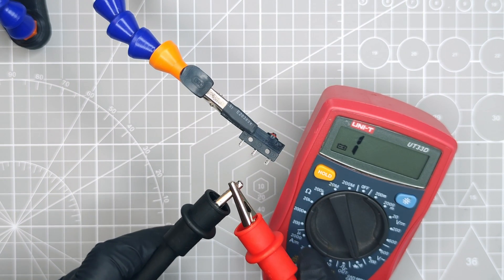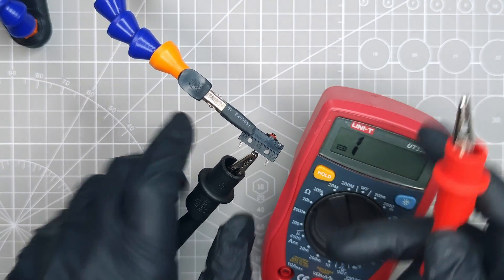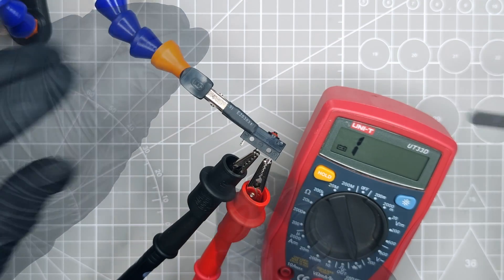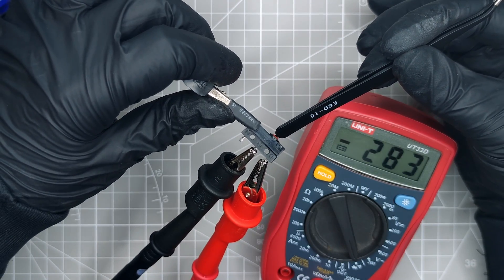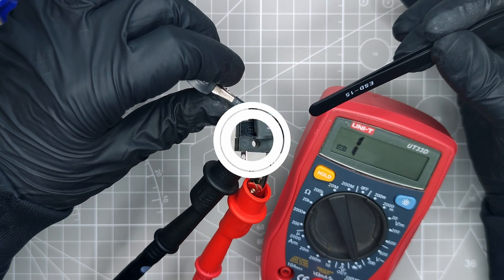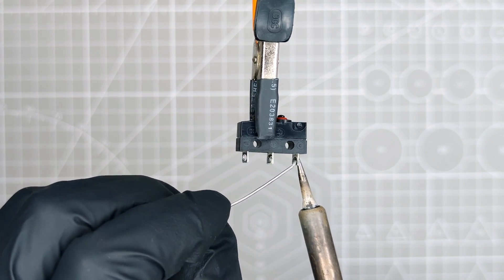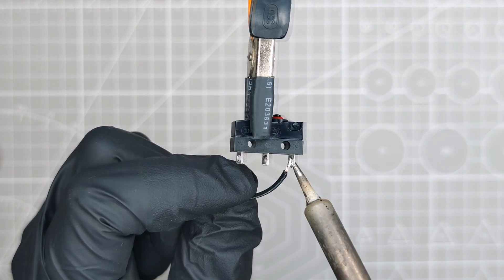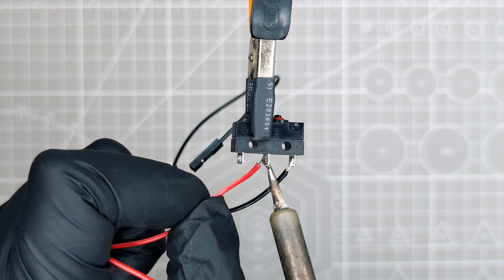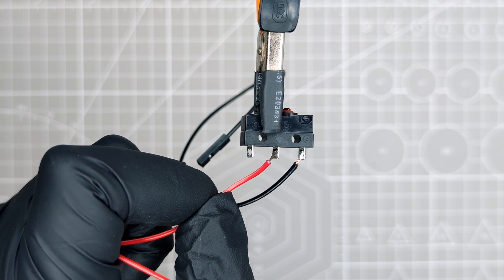First, I check that there is no resistance when I just touch the two probes. Then I connect one probe to the NO terminal and the other to the ground terminal. Now when I press the switch, I should see the resistance changing to zero. That is exactly what is happening here. We can now tin the two relevant terminals and solder the black wire to one of the terminals, then the red wire to the other one. Ideally, you should solder the black wire to the C terminal, but that does not really matter.